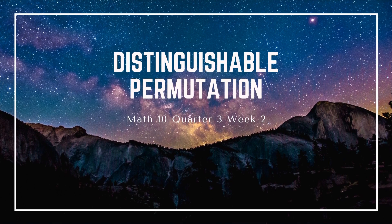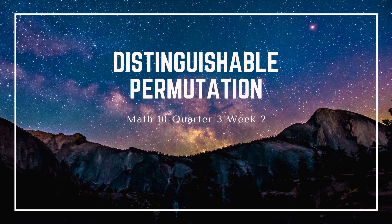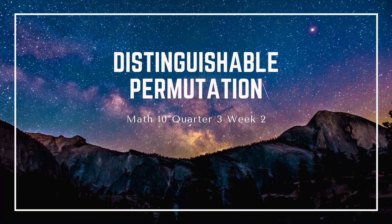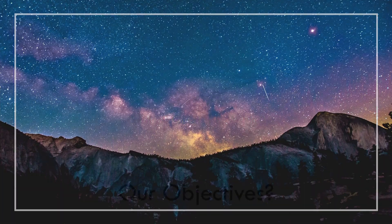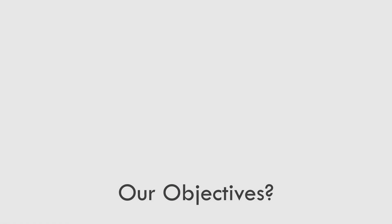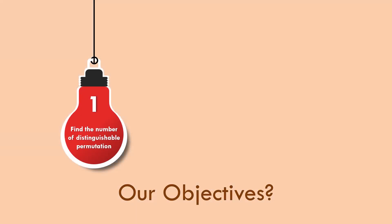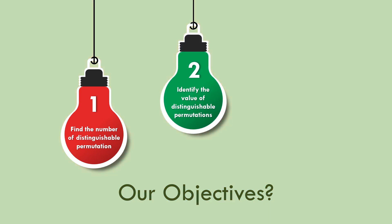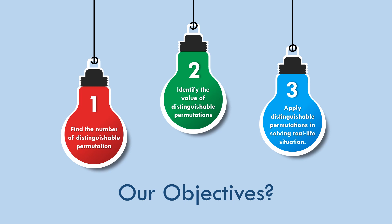Our lesson is about distinguishable permutation. Our objectives are: first, we will find the number of distinguishable permutations; second, we will identify the value of distinguishable permutations; and third, we will apply distinguishable permutation in solving real-life situations.